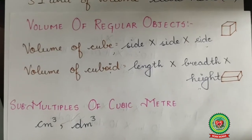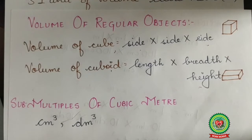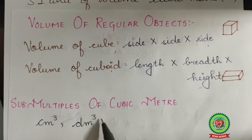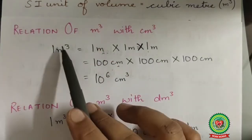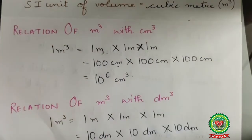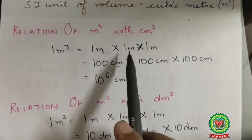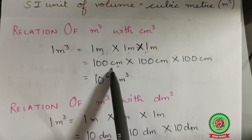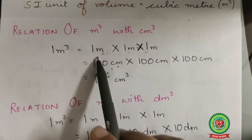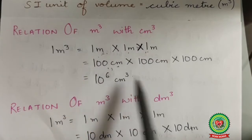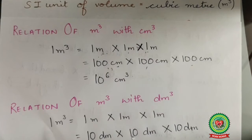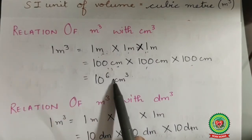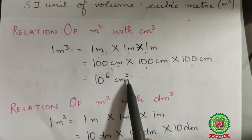Our next topic is sub-multiples of cubic meters. Sub-multiples means smaller units. They are centimeter cube and decimeter cube. Next is the relation of meter cube with centimeter cube. 1 meter cube equals 1 m × 1 m × 1 m. Since 1 meter equals 100 centimeters, we write 100 cm × 100 cm × 100 cm, which gives the relation: 1 meter cube equals 10⁶ centimeter cube.